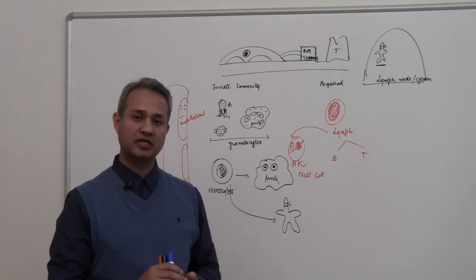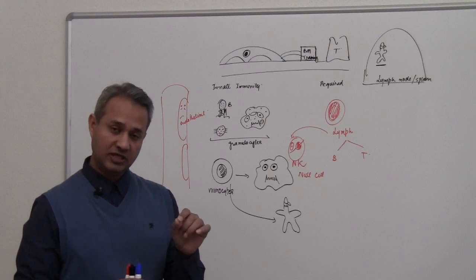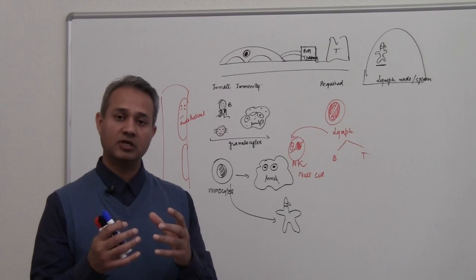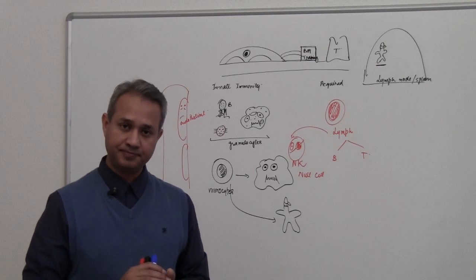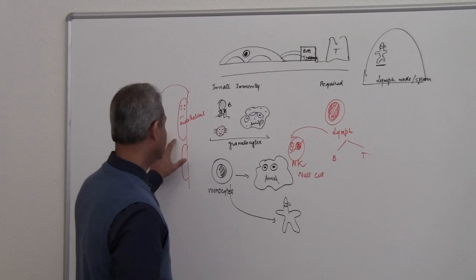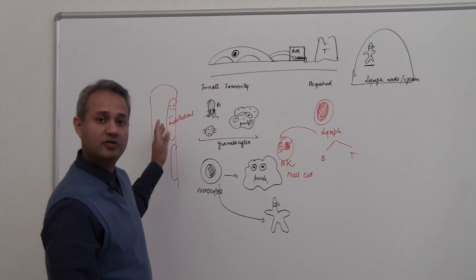And in future we would see that they are also very important cells to note when we talk about grafting. Tissue graft many times gets rejection, and the first line of cells which get destroyed are the endothelial cells.